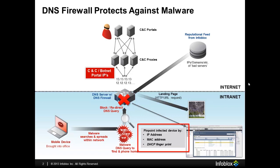Infoblox DHCP server release 6.7 has added DHCP fingerprinting. For those Infoblox DNS Firewall, DHCP, and IP address management customers, this means the DNS Firewall, in conjunction with the Transit Reporting Server, can now not only report on which IP address made the bad DNS query, but also identify the MAC address and, via DHCP fingerprinting, the device or OS type.